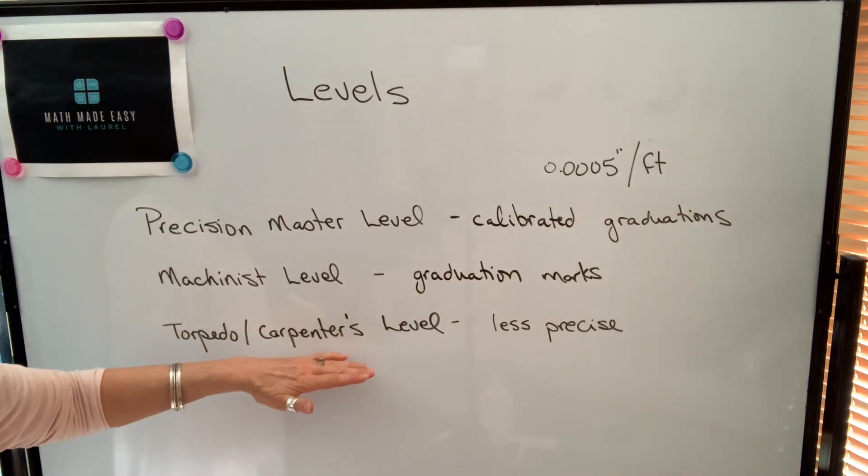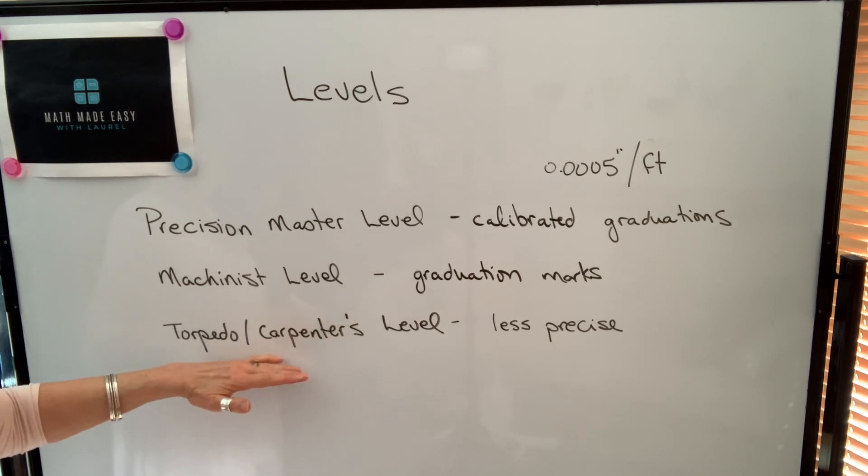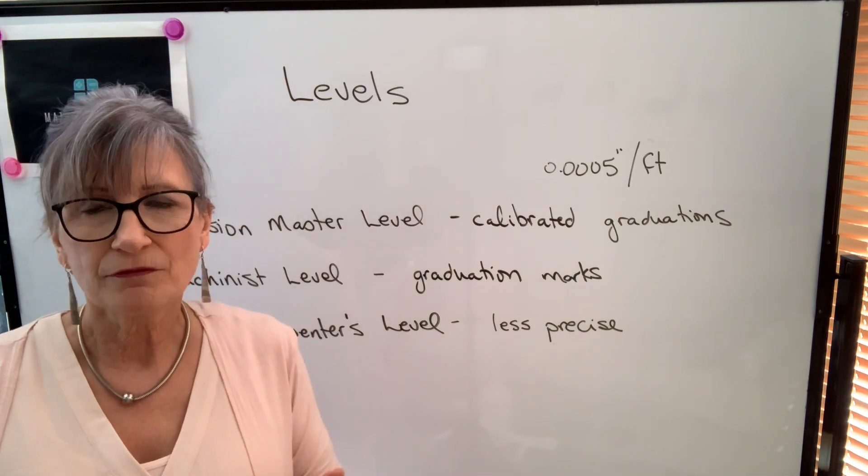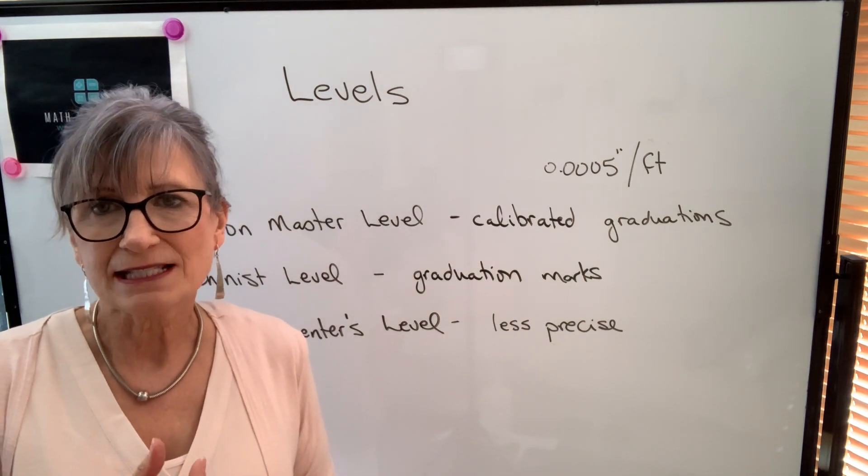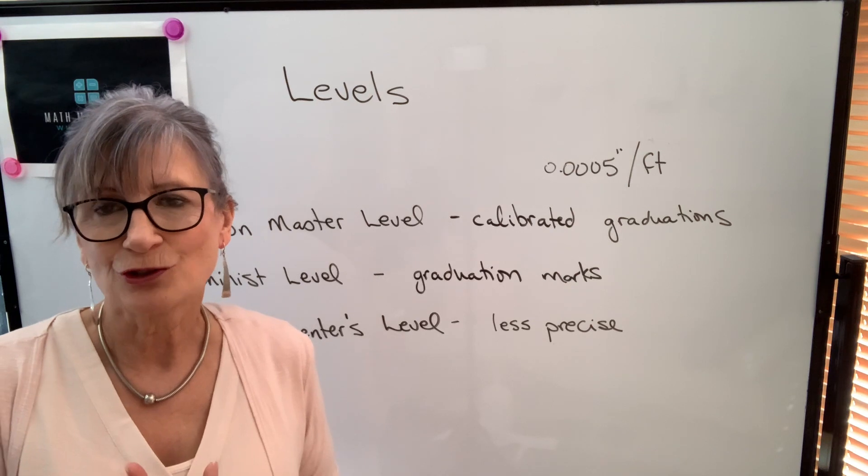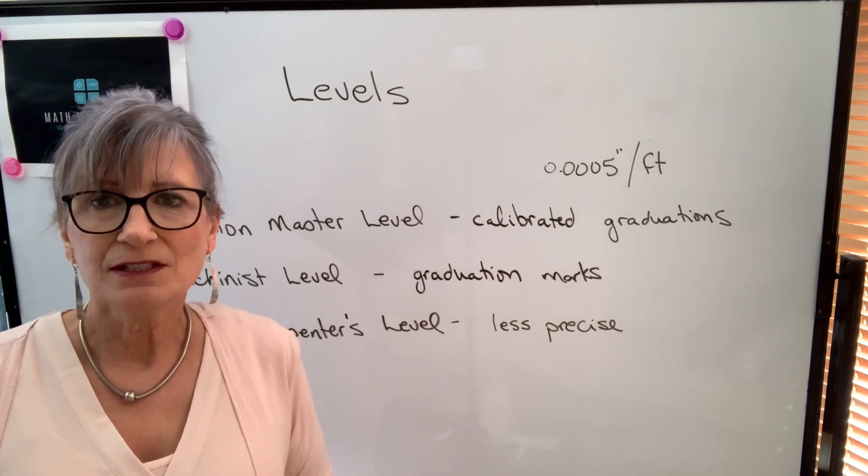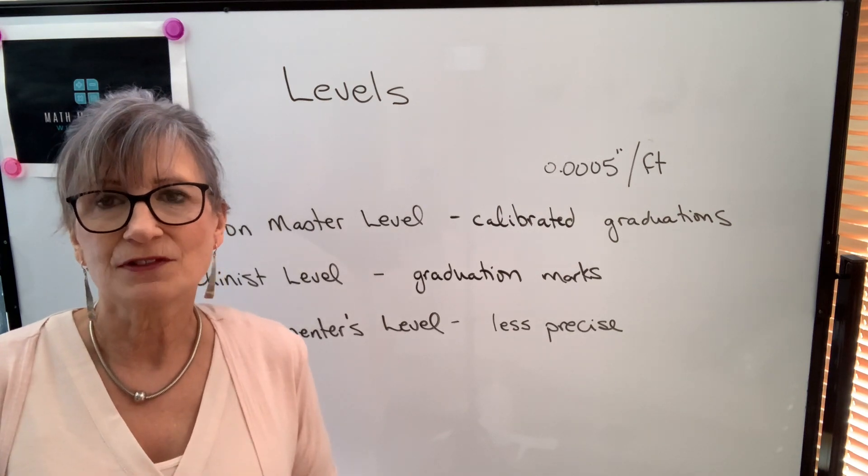The last type of level you might work with is the least precise, and that's the torpedo or the carpenter's level. There's no graduation marks on the vial. You just look to see whether the bubble is centered or not. So let's take a look at using each of these types of levels in an example.